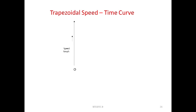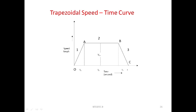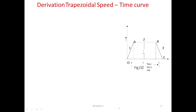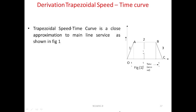For the trapezoidal curve, the y-axis represents speed and the x-axis represents time. If we draw the trapezoidal curve for main line services, OA is the acceleration period, AB is the free-running or coasting period, and BC is the braking period. T1, T2, T3 are the respective times, and Vm is the maximum speed in kilometres per hour.